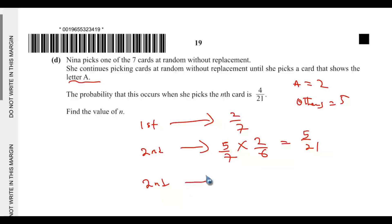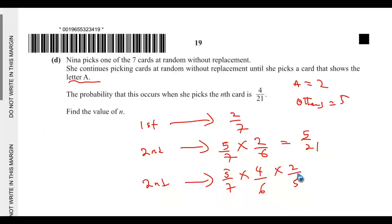For N equals 3: the first pick is not A (5 out of 7), the second pick is also not A (4 out of 6), and the third pick is letter A (2 out of 5). Simplifying: 5 cancels with 5, leaving 4 times 1 over 7 times 3, which is 4 out of 21. That matches the given probability. So N equals 3.